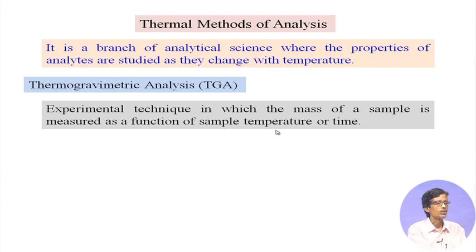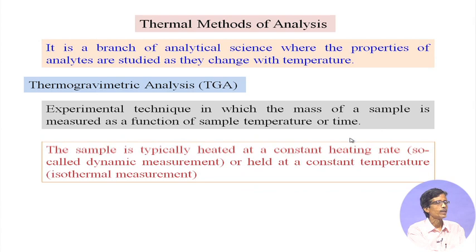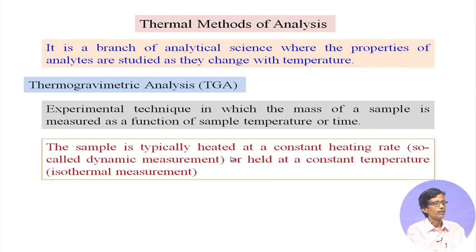We can monitor mass loss with temperature rise, and sometimes when cooling in reverse there can be mass gain. The heating rate of the furnace holding the sample over the balance is synchronized with the temperature rise, so we can also plot against time. We can heat the analyte at a constant heating rate — say 5°C per minute or 10°C per minute — which is called the dynamic measurement.